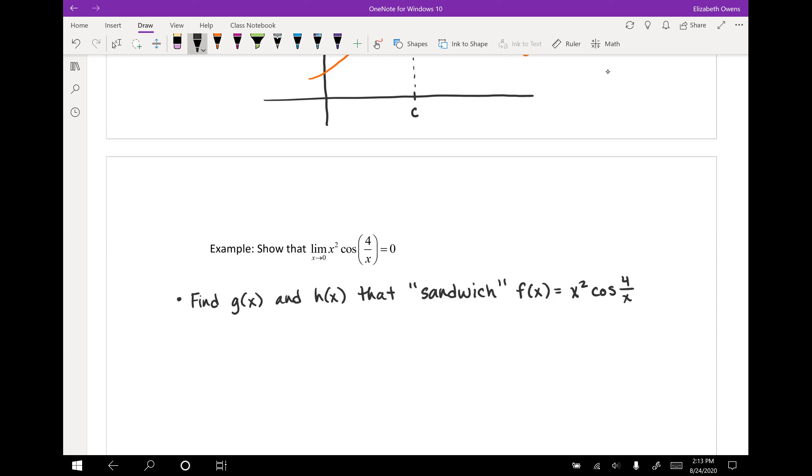Note that on this problem, we couldn't have just used direct substitution. Plugging in x equals zero, our limit value, not going to work in that denominator. So it's always good to check that first because that's usually the easiest way to find a limit if it works. So we need g of x and h of x that sandwich this f of x function and have the same limit as x approaches zero, since that's the point that we're interested in.